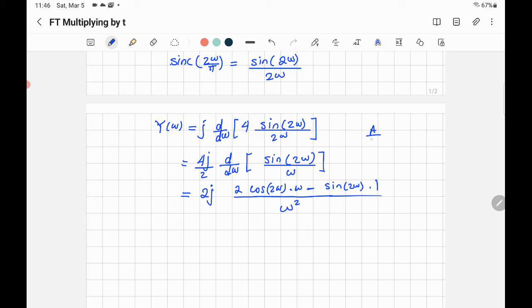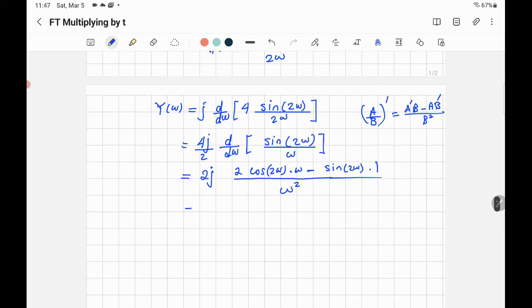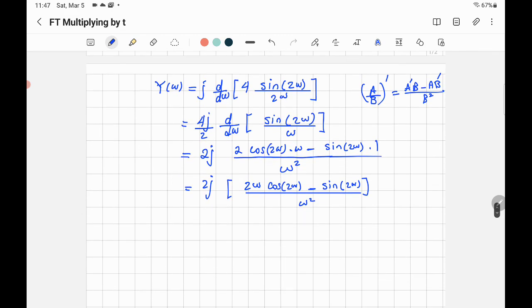So what I did here: differentiation of rational function. When you find the differentiation of this one, it will be a dash b minus a b dash over b squared. That's what I did. If you want to review it again, that will be equal to 2 times 2 j, and then we have 2 times omega times cosine 2 omega minus sine 2 omega over omega squared. So that will be the Fourier transform of the small triangle form that we just did.